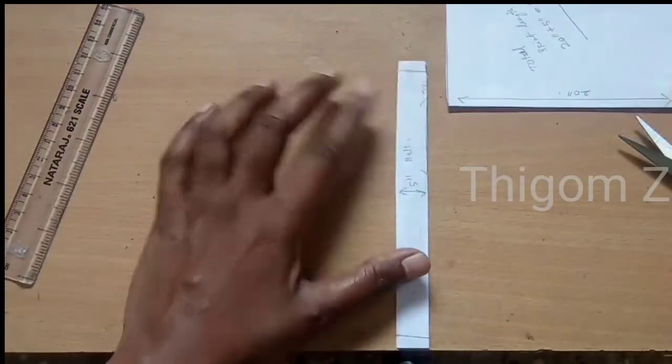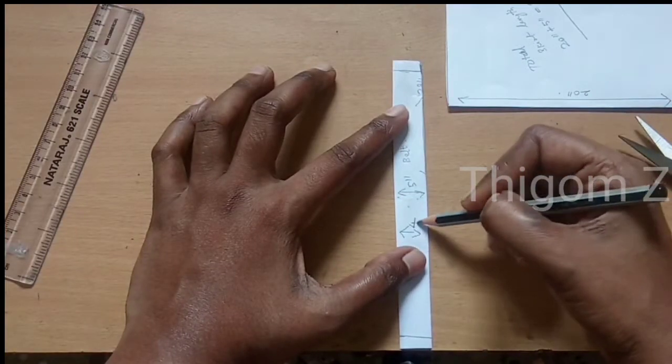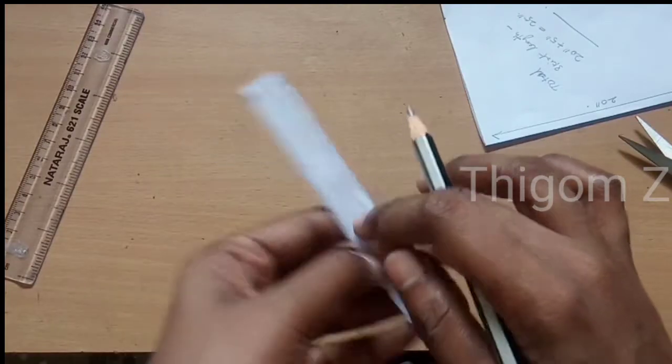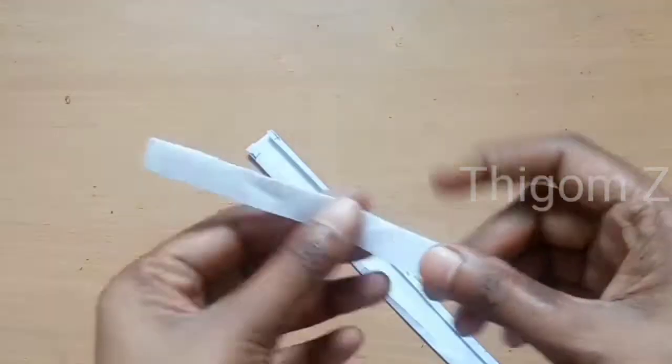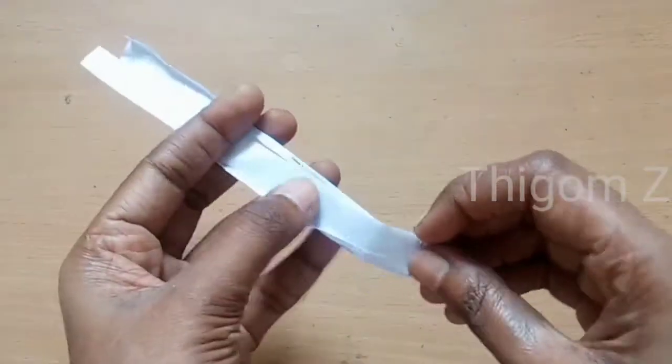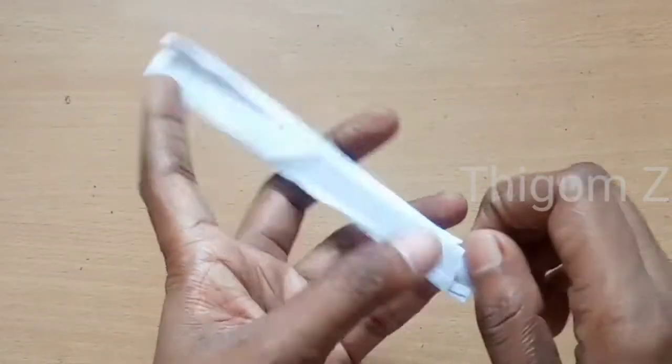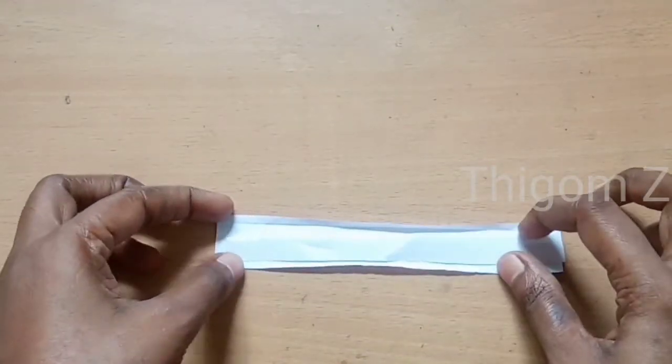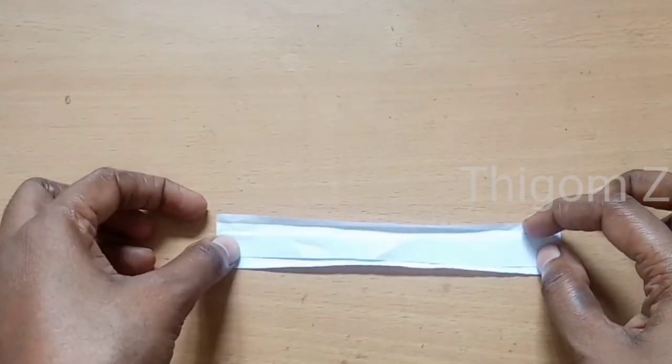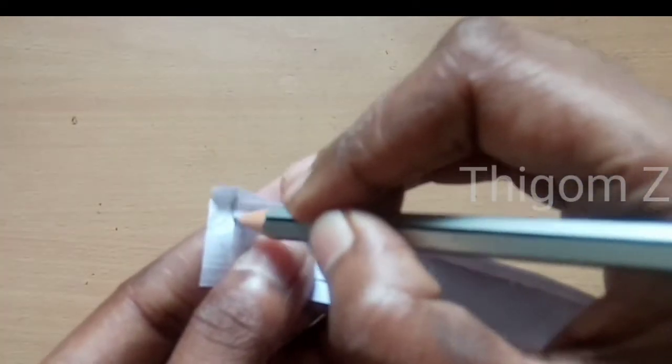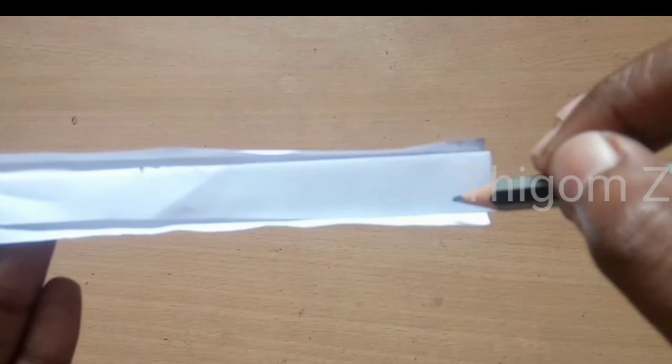Now I'm going to insert paper for thickness to the belt part, otherwise it would not have stiffness. So we need thickness for the belt part, that's why I'm adding some paper. You have to sew like this all 3 corners.